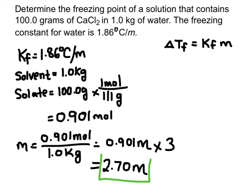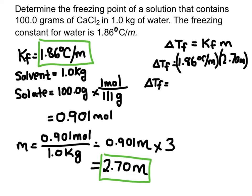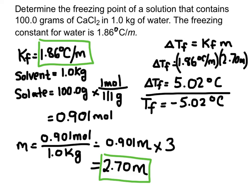With the molality of 2.70 and the freezing constant, I plug them into the equation and get a change in freezing point of 5.02 degrees Celsius. The actual freezing point decreases from zero by 5.02, giving a final freezing point of negative 5.02 degrees Celsius. The key thing to remember is that for an electrolyte solute — an ionic compound — you need to count up the number of ions and multiply the molality by that number before plugging it in.